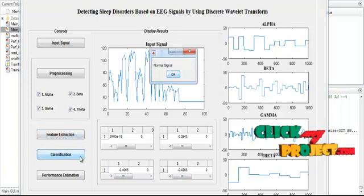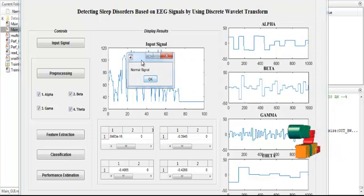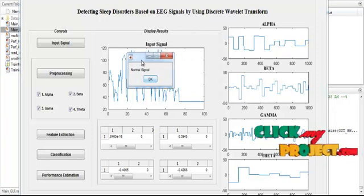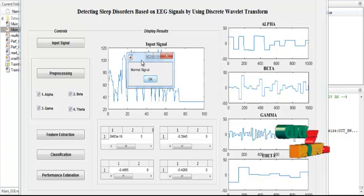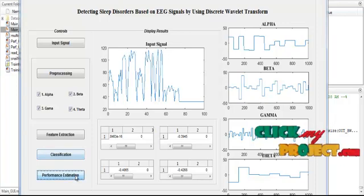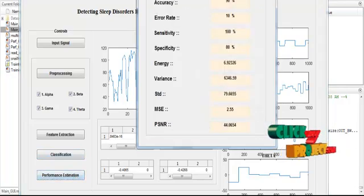After that, finally the classification will be done. In this classification process, it will be shown in the results as a normal signal. The input is the normal signal. After that, click the button performance estimation.